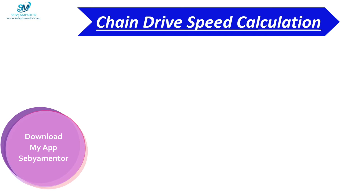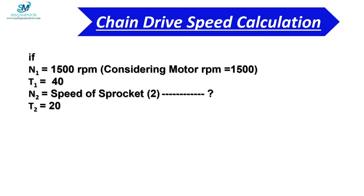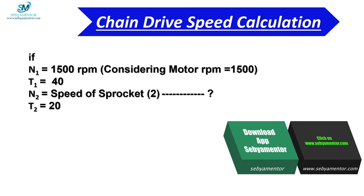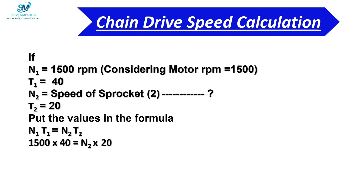Now let us see what happens when the position of the sprockets is altered — that is, if we fix sprocket 1 in place of sprocket 2 and sprocket 2 in place of sprocket 1. Here N1 = 1500 rpm, T1 = 40 after alteration of the sprocket, and T2 = 20 after alteration. If we put all these values in the formula N1 × T1 = N2 × T2, we get 1500 × 40 = N2 × 20.